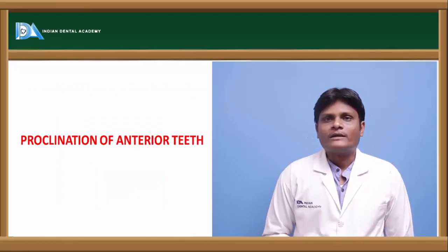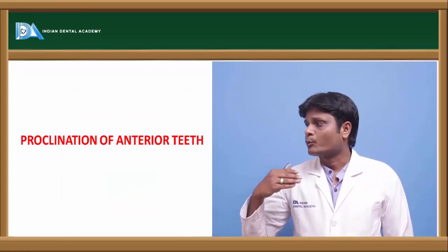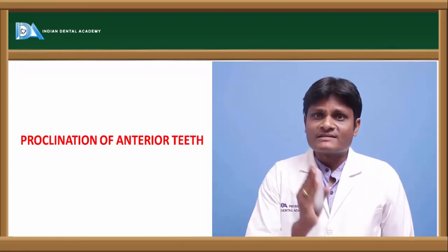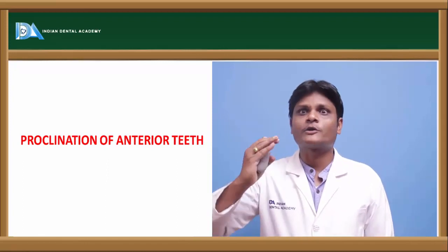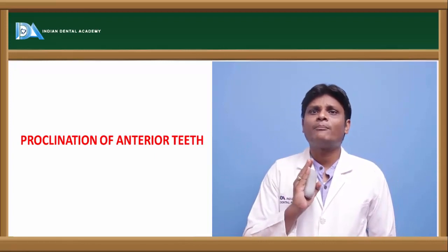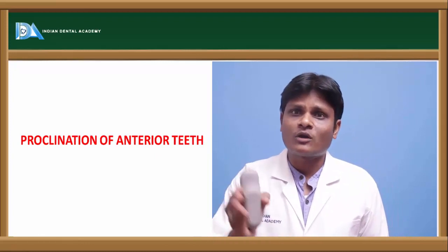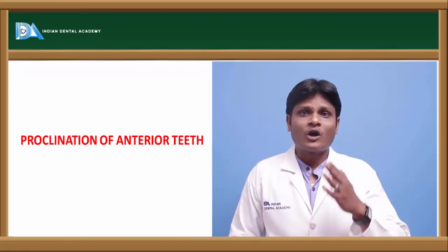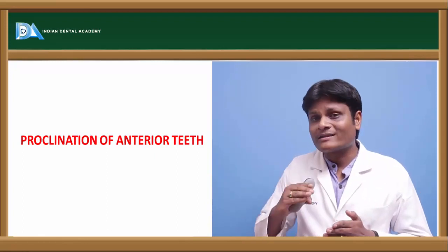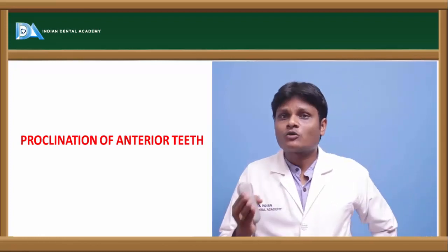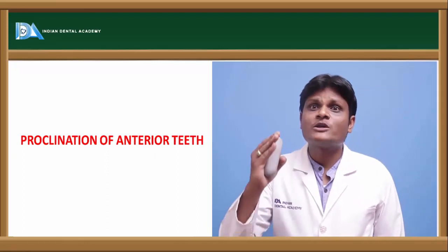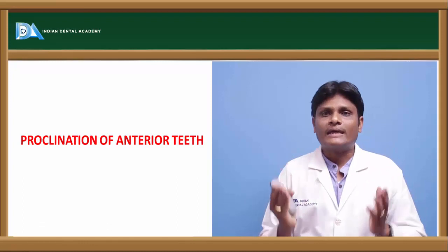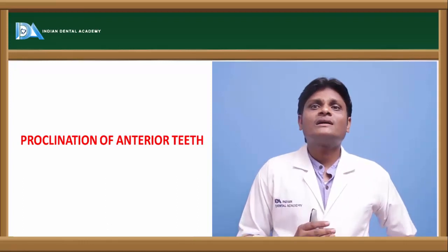Proclining or flaring of anterior teeth is another method of obtaining space. This is reserved only for patients with a good or slightly retrognathic or slightly concave profile — such as Class II division II cases. You cannot procline upper or lower anteriors to gain space when the patient already has proclined teeth or a convex profile. By proclining the anterior teeth, the arch perimeter is increased, and the gained space can be utilized for decrowding the anterior teeth.